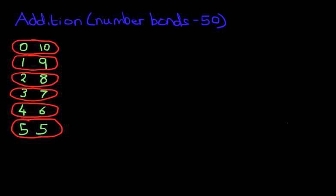0 and 10, 1 and 9, 2 and 8, 3 and 7, 4 and 6, 5 and 5. And what did we notice about them? They all equal 10. Those are the number bonds for 10.